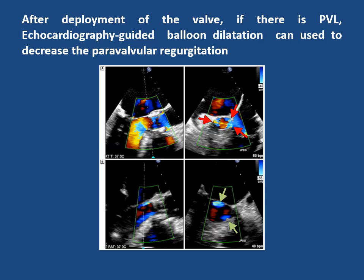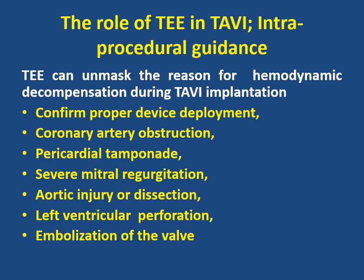After deployment of the valve, if there is paravalvular leak, echocardiography-guided balloon dilatation can be used to decrease the paravalvular regurgitation. TEE can also unmask the reason for hemodynamic decompensation during TAVI. It can confirm proper device deployment, detect coronary artery obstruction, exclude pericardial effusion and cardiac tamponade, assess the presence of severe mitral incompetence, detect aortic injury or dissection, left ventricular perforation, or even device embolization.